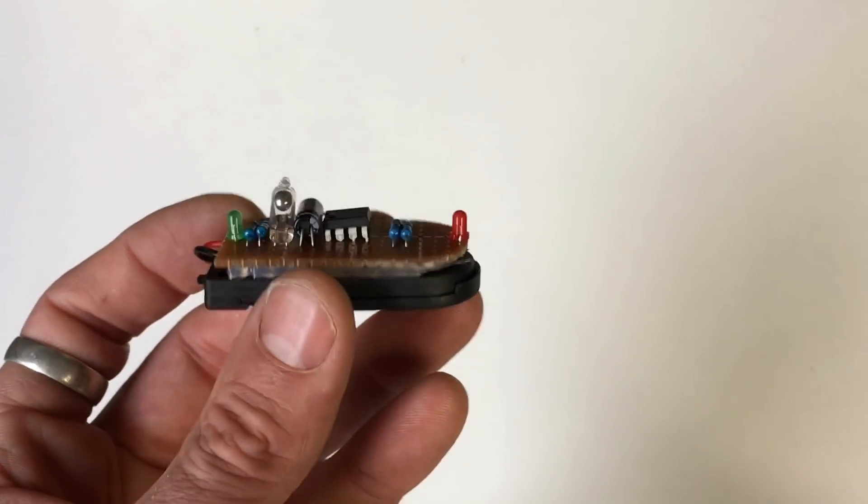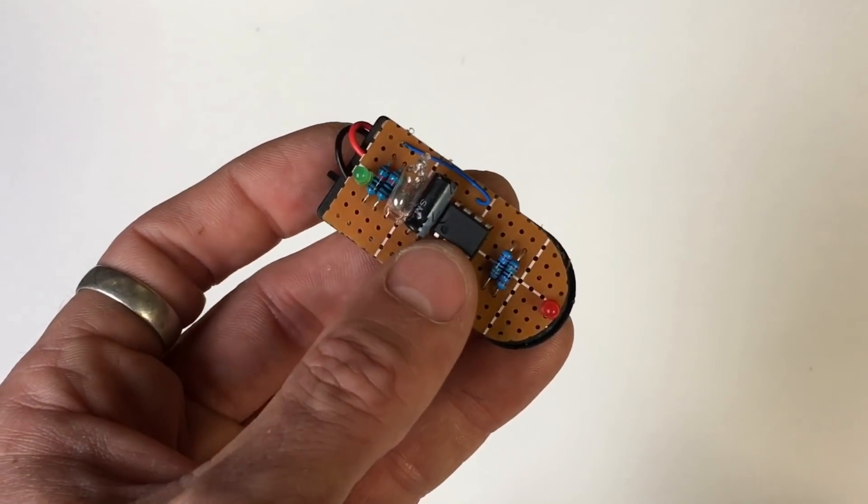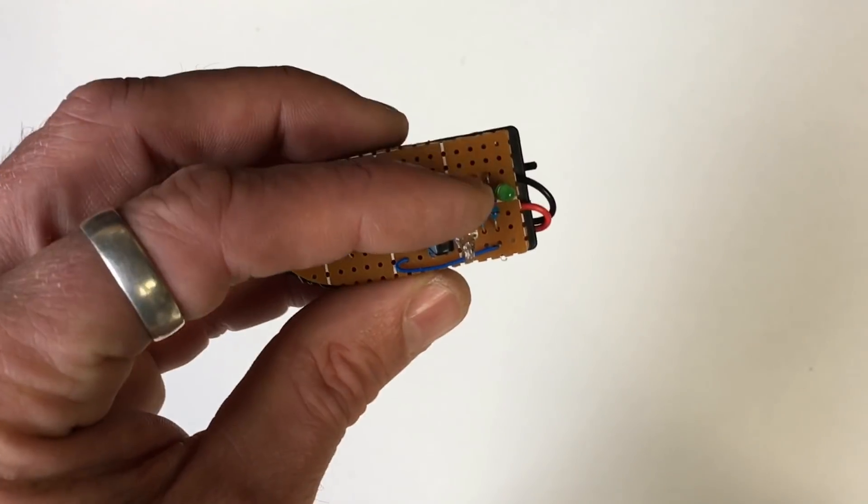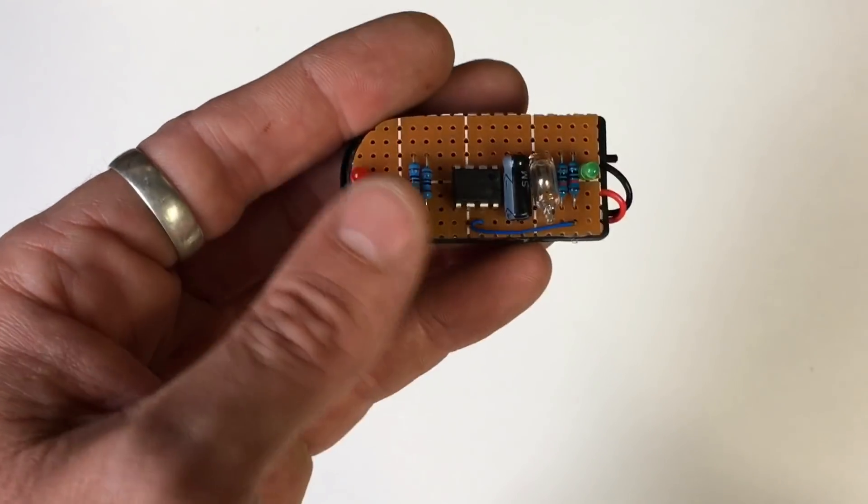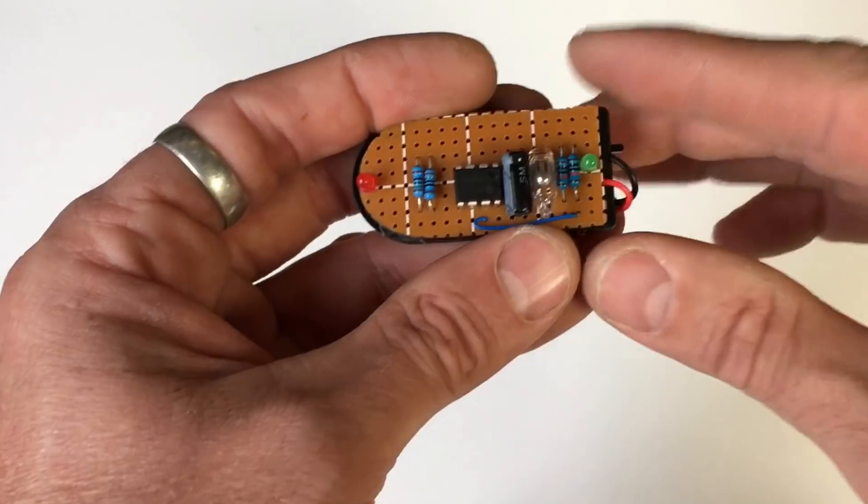But really it's just a couple LEDs and a 555 timer. I've added a mercury switch, you can see that moving back and forth, and that's what activates either the red LED or the green LED.